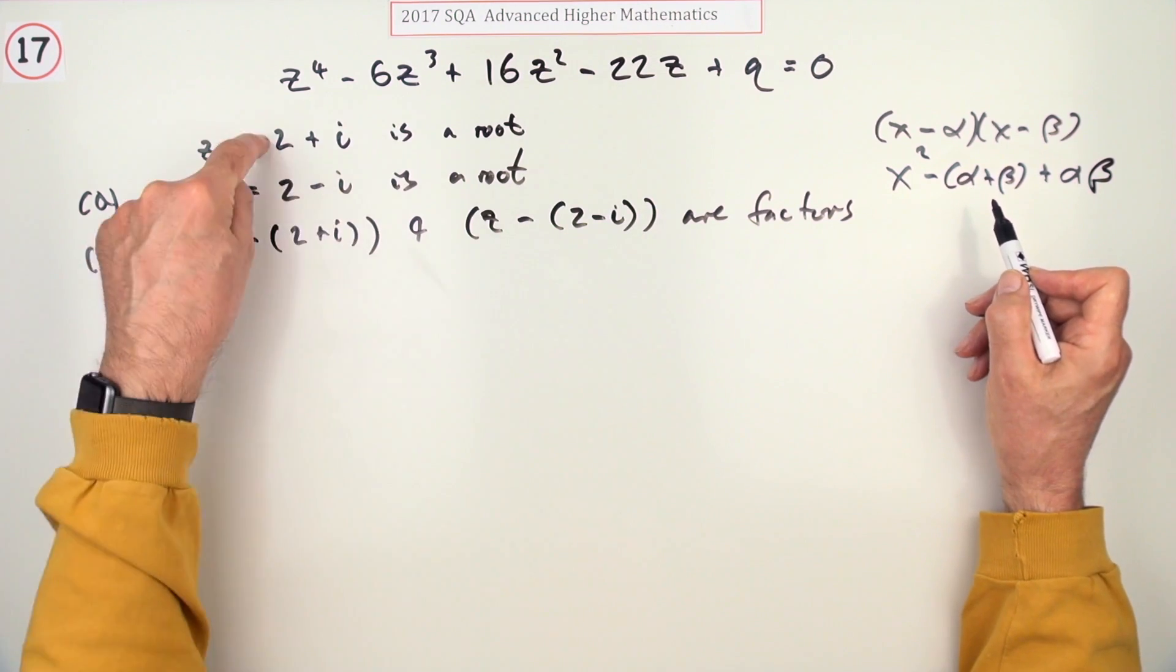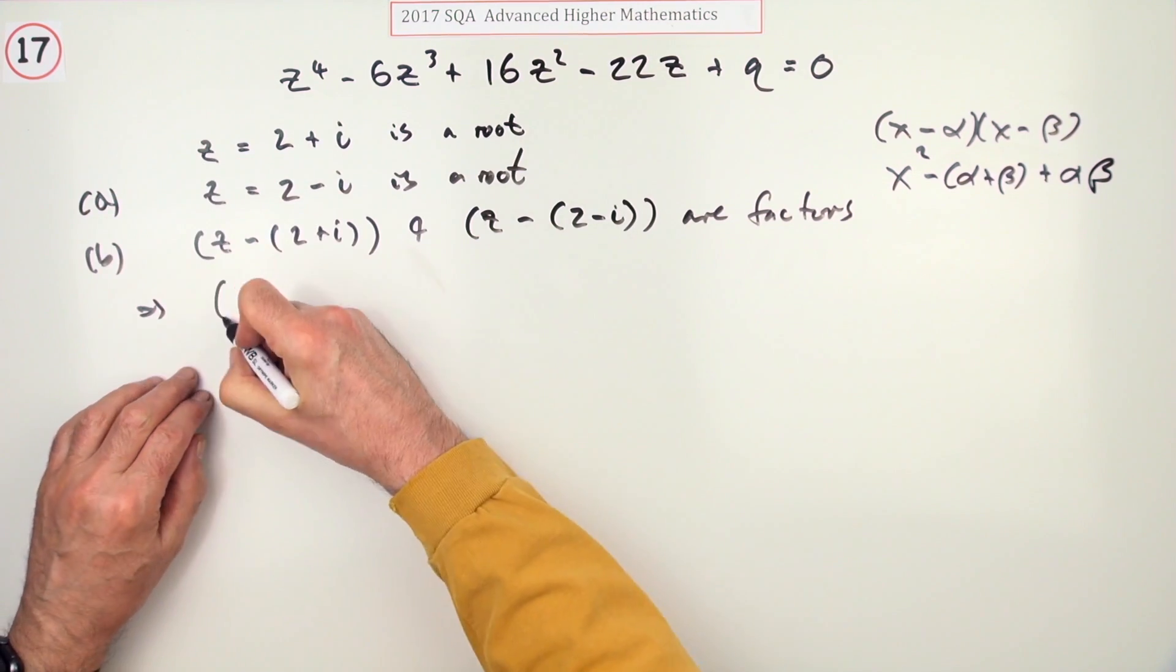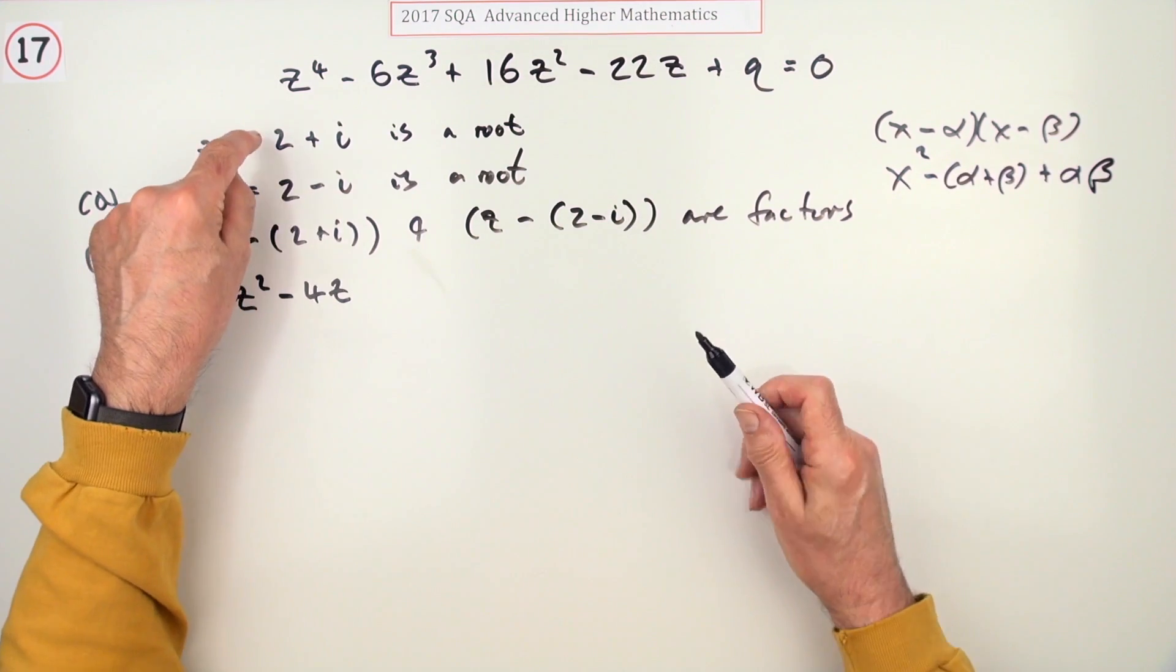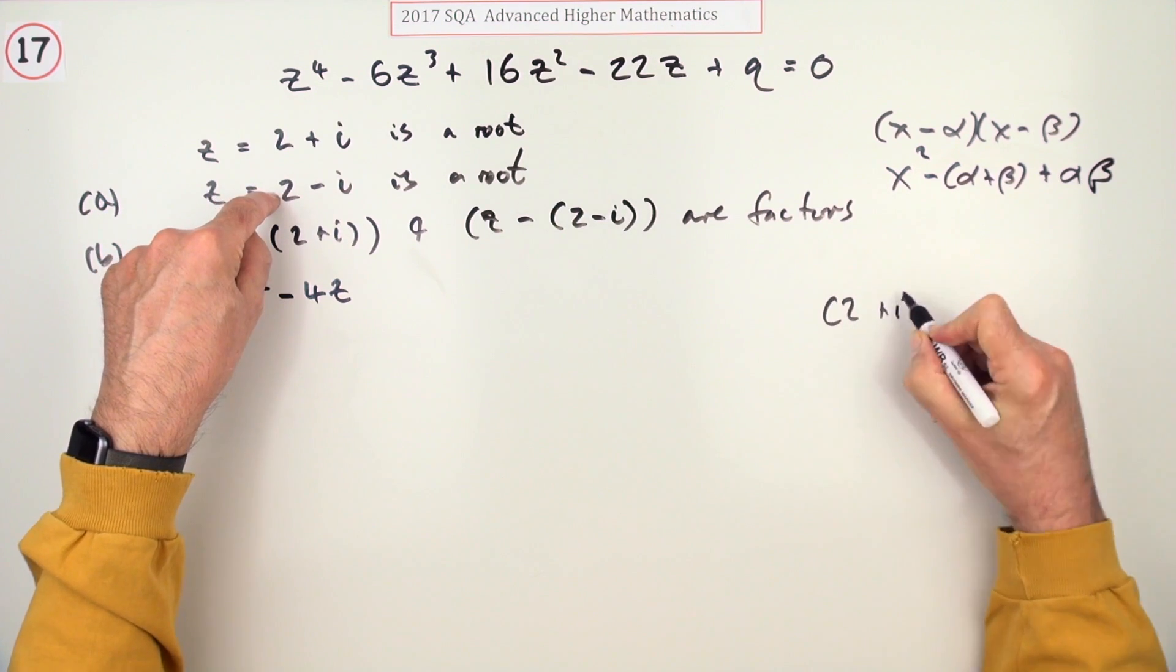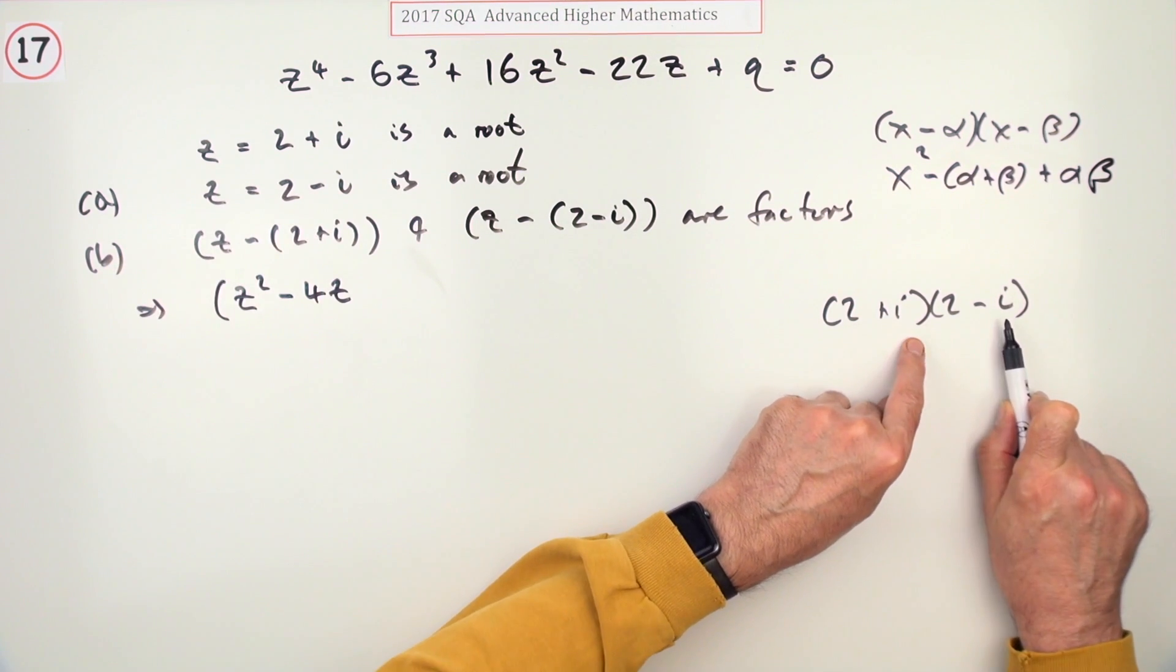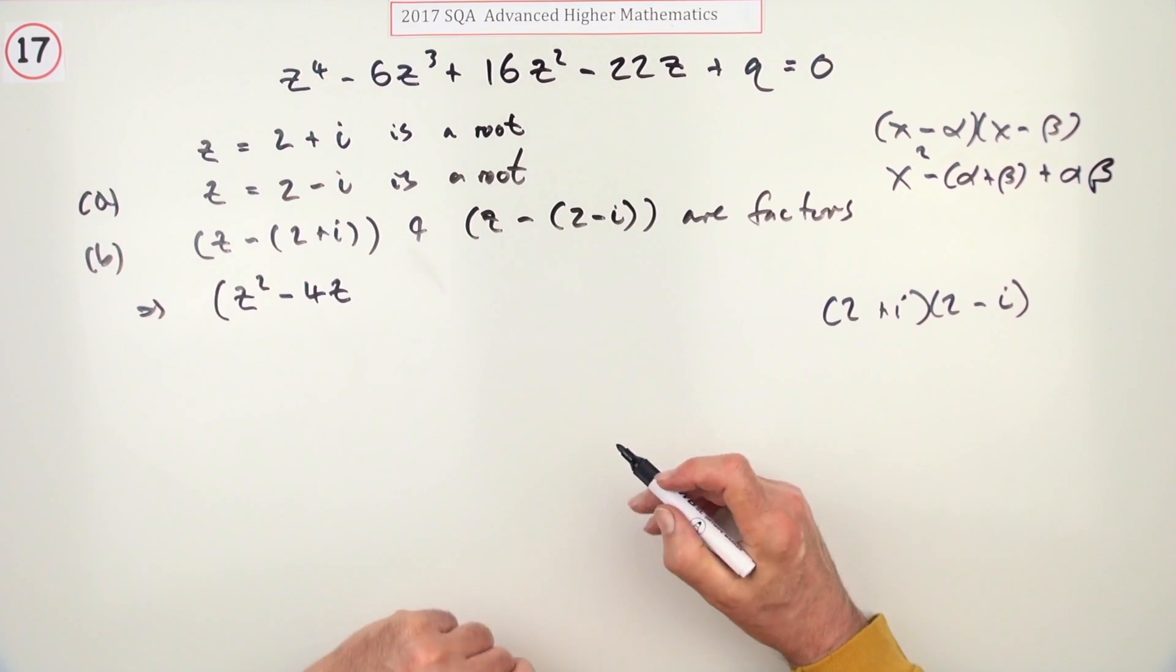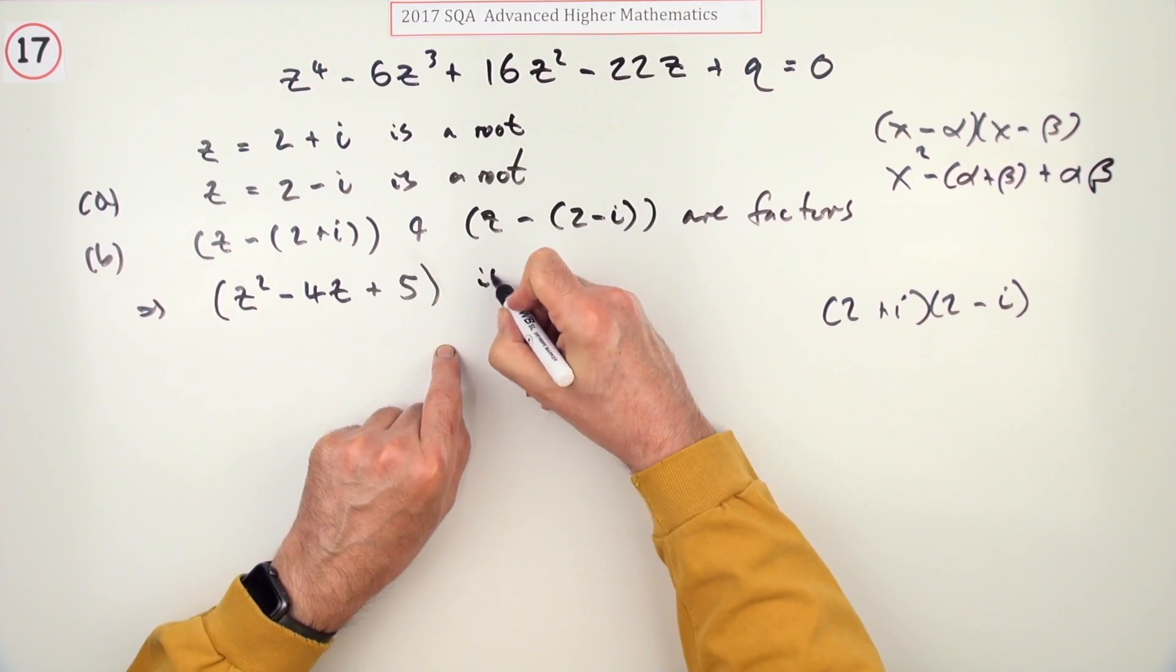Adding them together, the imaginary part disappears and you just get double the number in front, so it's z² - 4z. The product of the roots: 2 + i times 2 - i is the difference of two squares pattern, giving 4 + 1 = 5. So the quadratic factor is z² - 4z + 5.